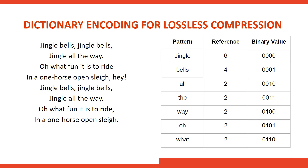Continuing through the list, 'bells' occurs four times and gets the binary value 0001, and so on. For your exam you're expected to be aware of dictionary encoding and the basics of how it operates — you don't need to go into all the ins and outs of everything with these encoding methods.